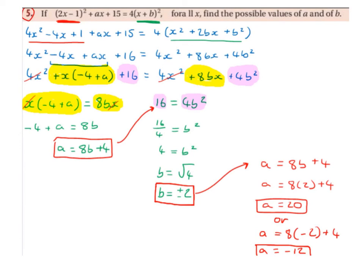So b is equal to plus or minus 2, and a is equal to 20 or minus 12.